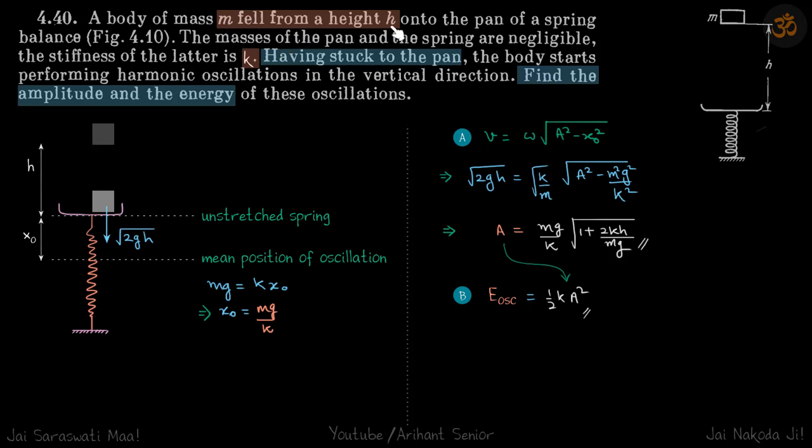A mass m falls from a height h onto a pan. Having stuck to the pan, the body starts to perform SHM. We need to find the amplitude and energy of these oscillations. When it falls from height h, its velocity will be root 2gh.